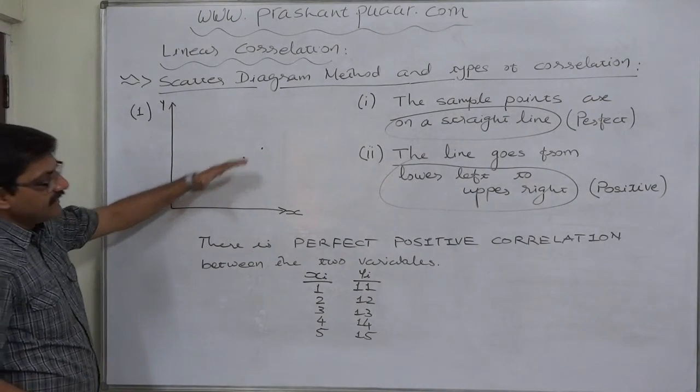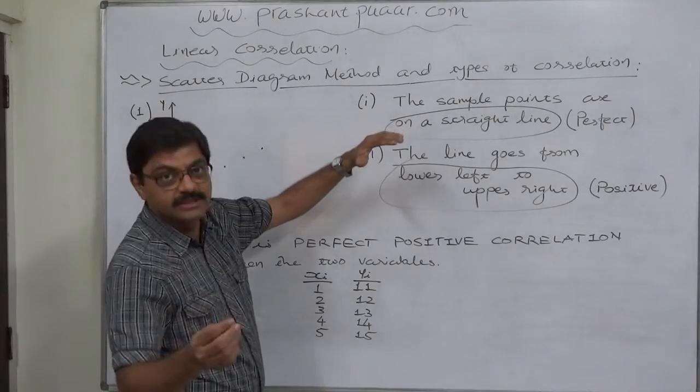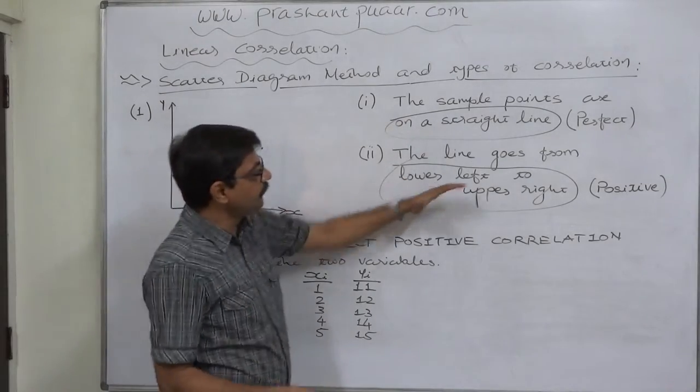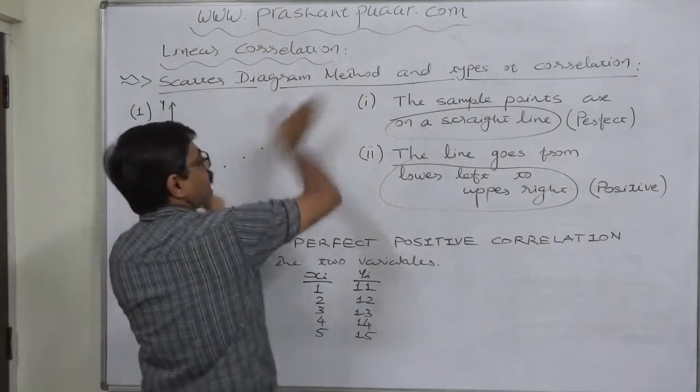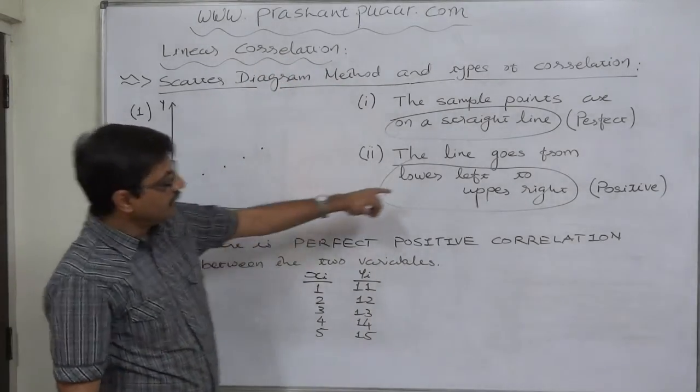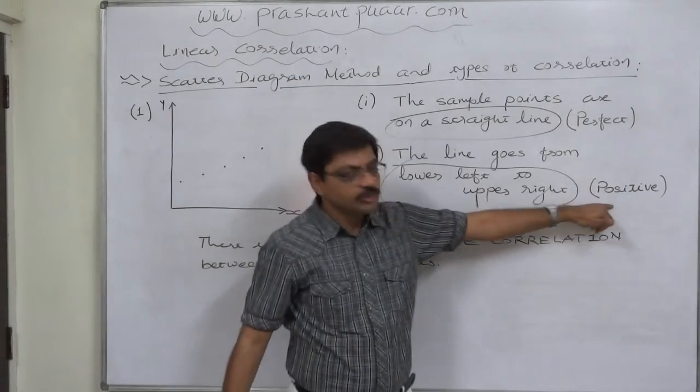If that line, say rather imaginary line, goes from lower left to upper right, now lower left to upper right suggests positivity.